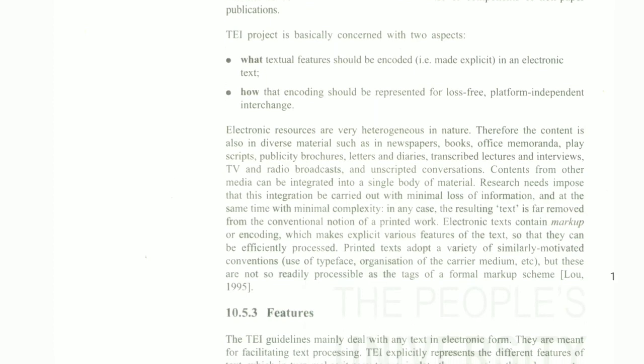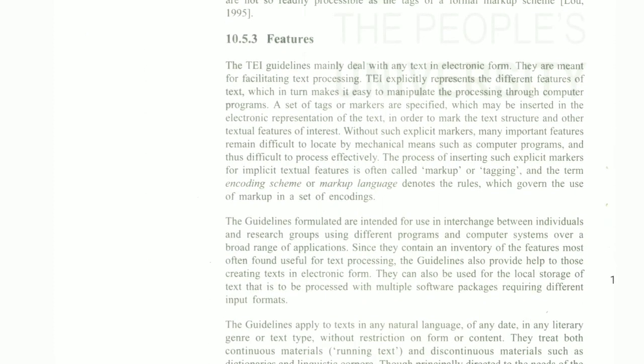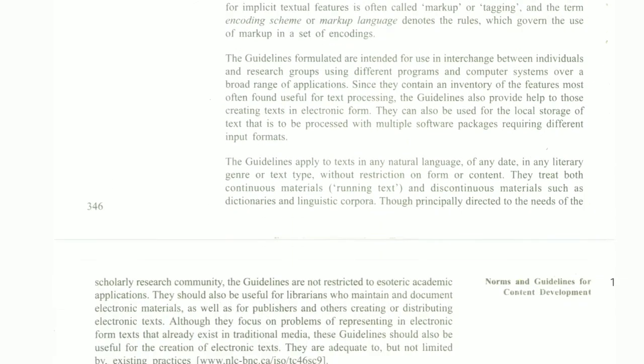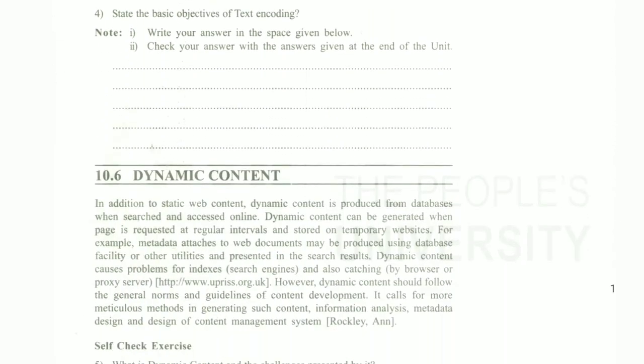For loss-free or platform-independent interchange, the TEI guidelines mainly deal with any text in electronic form. They are meant for facilitating text processing. TEI explicitly represents the different features of text, which in turn makes it easy to manipulate other things.